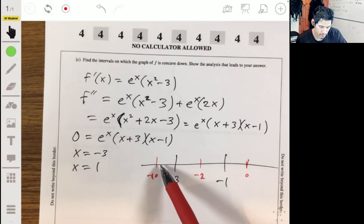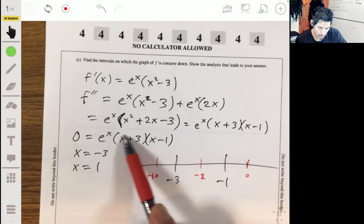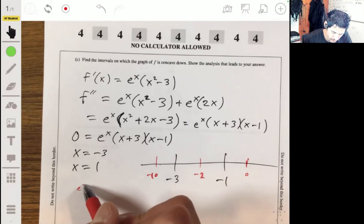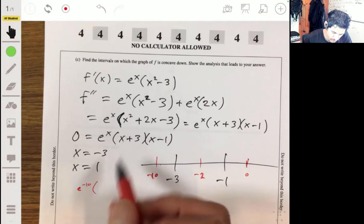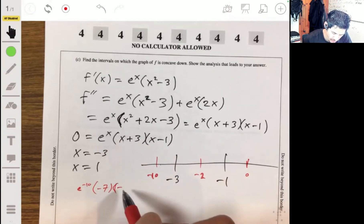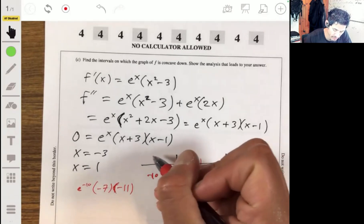So put negative 10 into here, e to the negative 10, negative 10 plus 3, negative 7, negative 10 minus 1, negative 11. So we have a negative times a negative times a positive, the positive and positive. So we have a positive here.